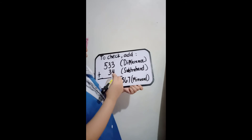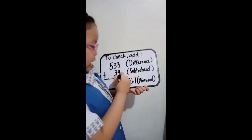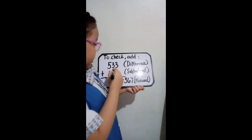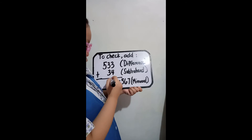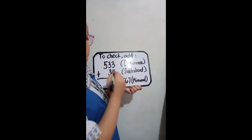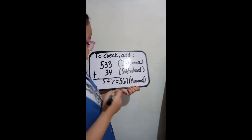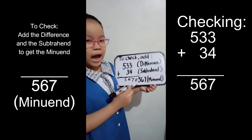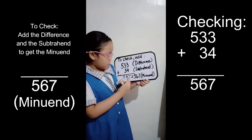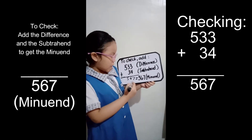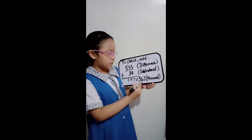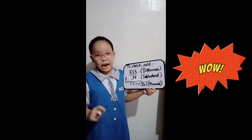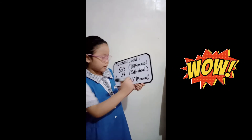3 plus 4 equals 7. 3 plus 3 equals 6. Let's bring down 5. 567 is the answer. 567 equals 567. So, that means our answer is correct.